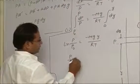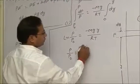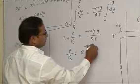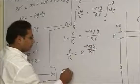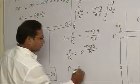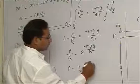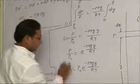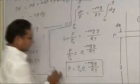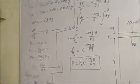So we can say P by P not equals e to the power minus mgy upon RT. Or P equals P not e to the power minus mgy by RT.